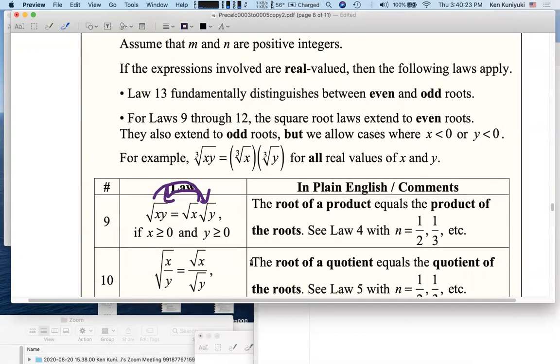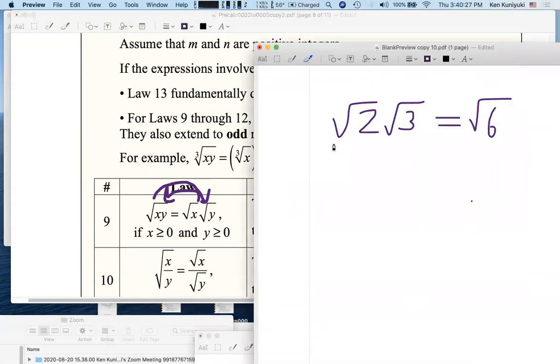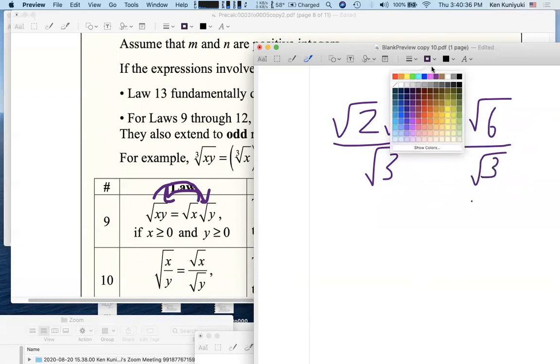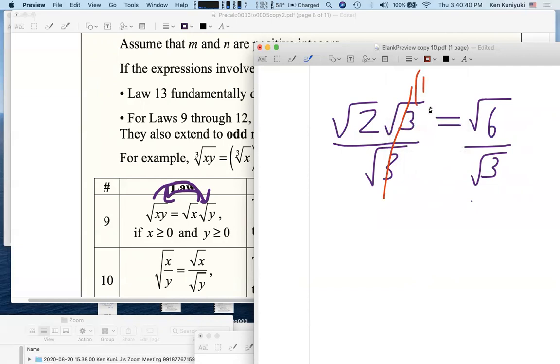Likewise, if we divide both sides by the square root of 3, let's say, these cancel out, root 3 divided by root 3 is 1. And we get that root 6 divided by root 3, the right-hand side here, equals the left-hand side, root 2.